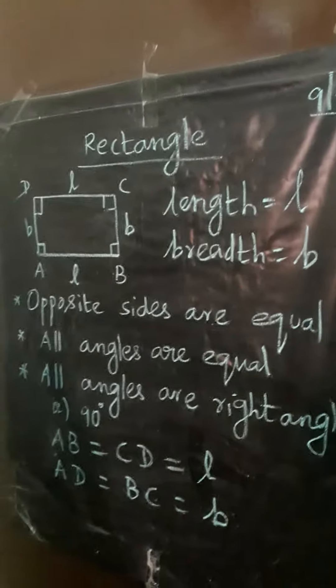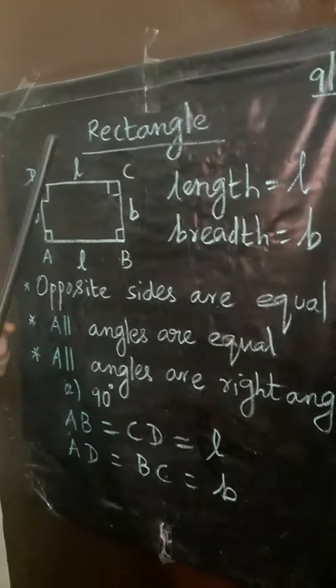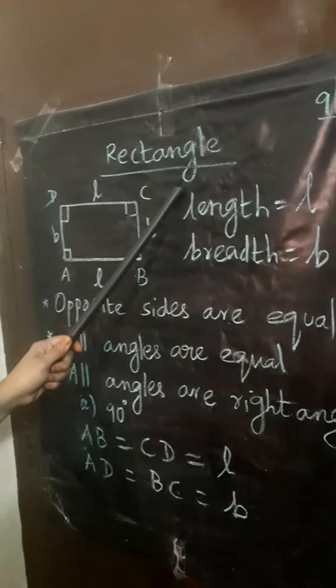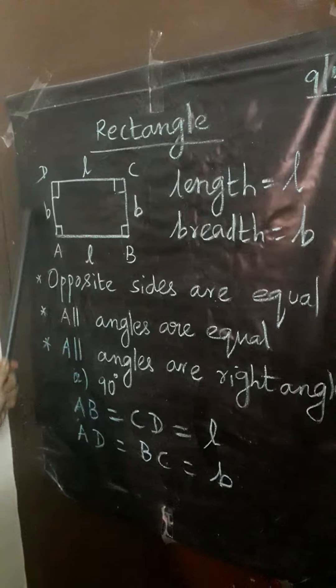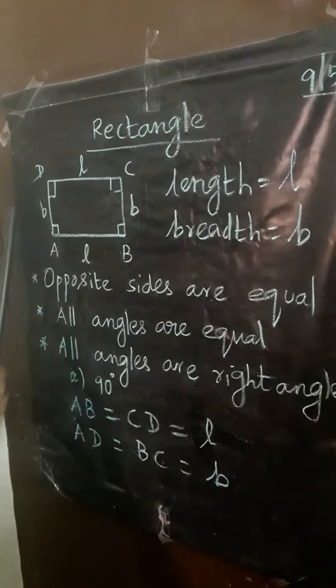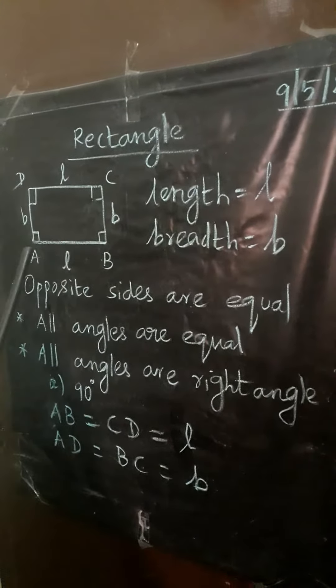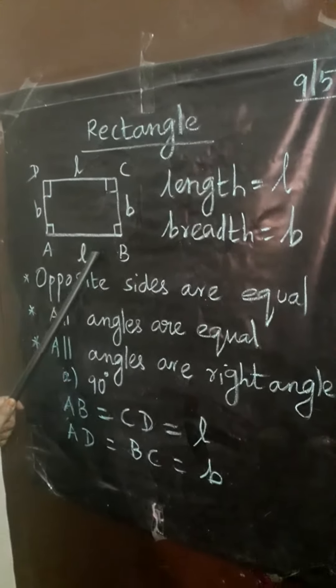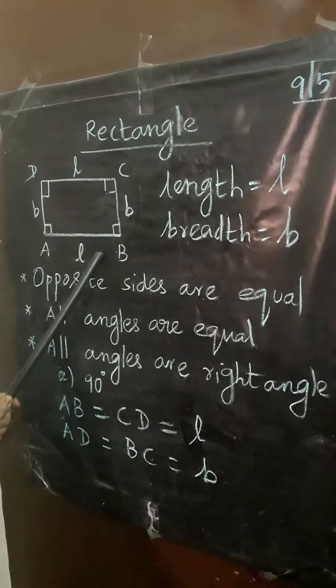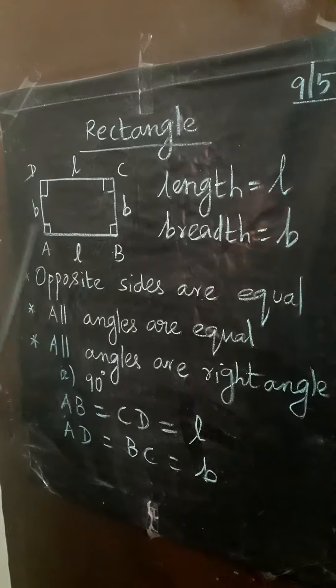Good morning students. Today we are going to learn about rectangle. Here A, B, C, D rectangle is given. This is a rectangle — it has four sides.